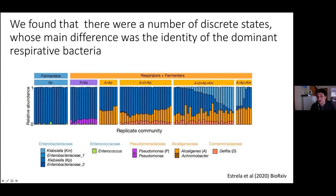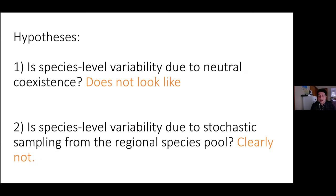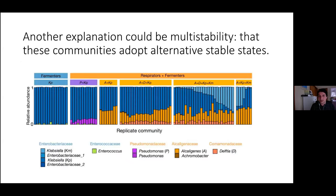The hypothesis of stochastic sampling from the species pool is clearly not correct — this was the hypothesis we had originally proposed in our 2018 paper. The hypothesis of neutral coexistence also does not appear to be primary, at least in pairwise competitions. However, as I'll point out at the end, some results suggest neutrality may have some contribution in certain cases. A less extreme possibility is that we have a situation of alternative stable states with multi-stability.